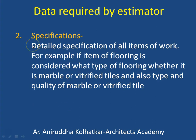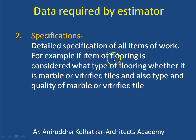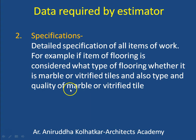The next thing required is specifications of all the items — detailed specifications of all items of work. For example, in the case of flooring, what type of flooring is used: whether it is marble, vitrified tiles, or any other type of tile, and what is the type and quality of that material used. Remember that the type, quality, or material used will directly affect the cost of the project.